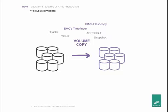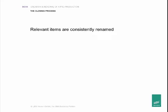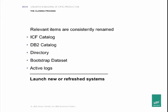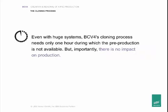Specialized programs process several parts in parallel. The relevant items are consistently renamed within the ICF catalog, DB2 catalog, directory, bootstrap data set, and active logs. At the end, everything is ready to launch the new or refreshed systems of the pre-production. Even with huge systems, this takes only an hour, during which the pre-production — i.e., the former version of it — is not available. But importantly, there is no impact on production.